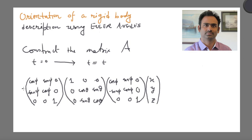And this will bring you to your final configuration, x prime, y prime, z prime. This is your matrix A, which we wanted to find out. That is your transformation matrix.